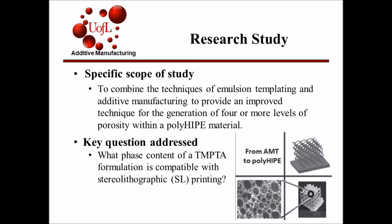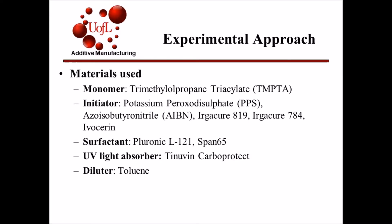The key question is: what phase content of TMPTA formulation will be compatible with SL printing? Each formulation test was first tested using the standard thermopolymerization technique before moving to SL polymerization. Each trial contained various phase contents with the monomer TMPTA being a constant. Different initiators were tested and used as cross-linkers for the monomer. Different surfactants were tested to help reduce the surface tension of the formulation. A UV light absorber was added to reduce the penetration depth of the SL light and improve final resolutions. Various percentages of the diluent toluene were also added to help reduce the overall viscosity of the formulation.